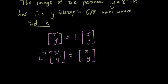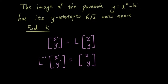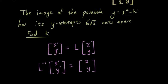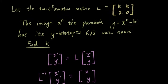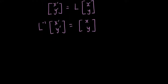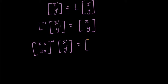The reason we do that is because we want to find the relationship between x' and y' in the image. If we substitute L inverse into this equation, we have the matrix kk20 inverse times (x', y') equals (x, y).